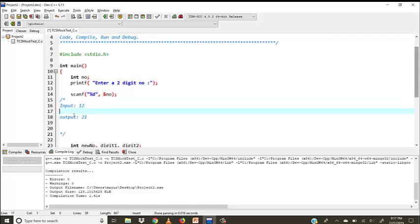So if we see, the number is formed in a way: 1 times 10 plus 2 times 1. This is the tens place, 1, and this is the units place number, 2.